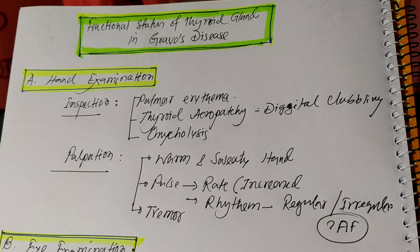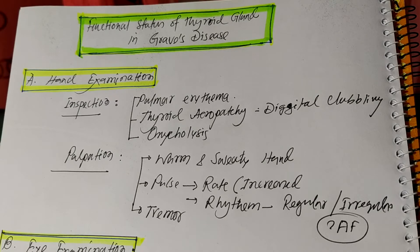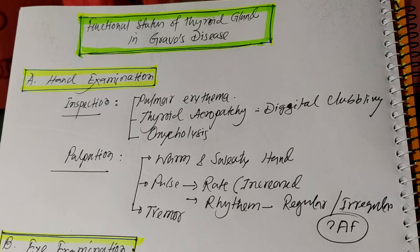After getting this type of thyroid finding, you are asked to examine the patient for thyroid status clinically. A Graves' disease patient may present in a thyrotoxic, euthyroid, or hypothyroid state. It is very important for clinical examination to evaluate which state the patient is in. Today's video is on this point — the functional status of the thyroid gland in a Graves' disease patient.